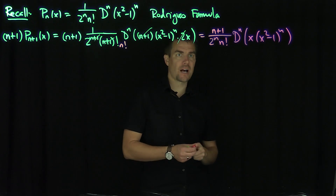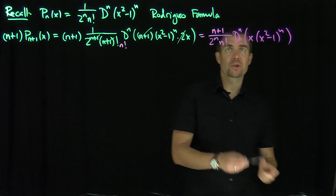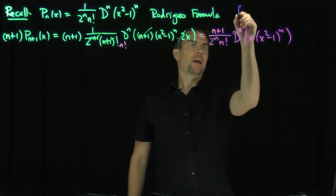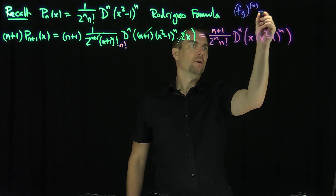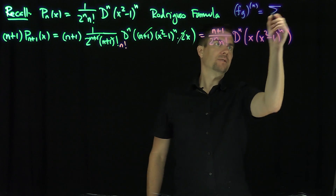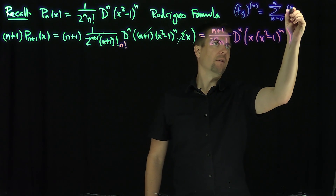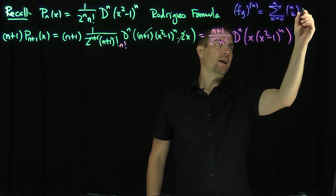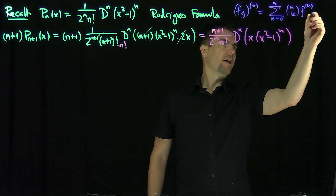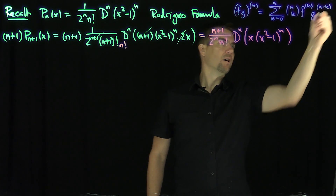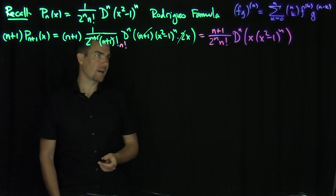Now I'd like to use the Leibniz rule for differentiating a product, which states that the nth derivative of f times g equals the sum from k=0 to n of n choose k, times the kth derivative of f, times the (n−k)th derivative of g. That's my generalized rule — the Leibniz formula.